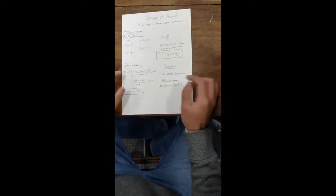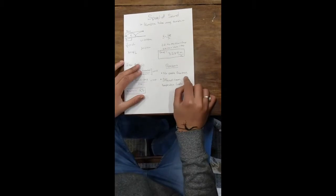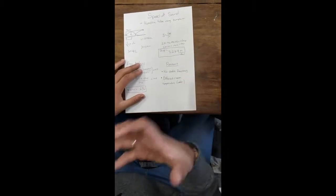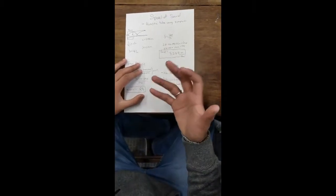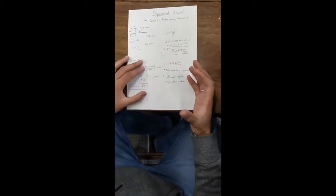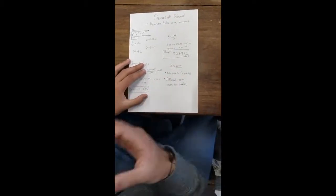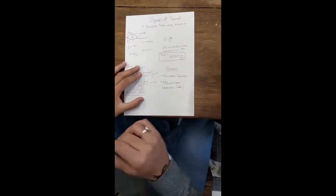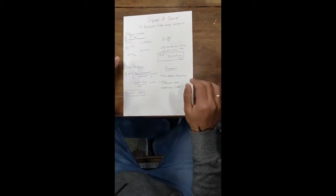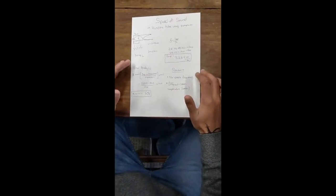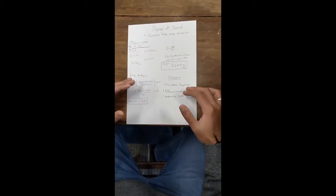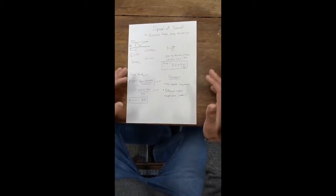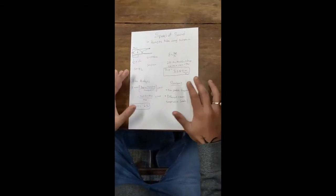Some potential reasons for this error: there was no stable frequency, as Rigpeh found it very hard to maintain the same note because of his mouth position. Also, the room temperature may have been different — potentially colder than where we originally made our measurements.